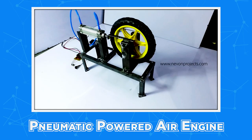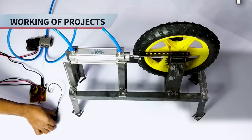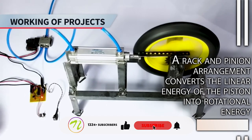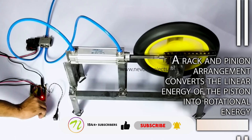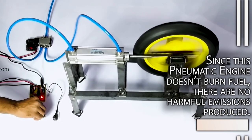Pneumatic powered air engine. This air powered engine is driven by a pneumatic piston. A rack and pinion arrangement converts the linear energy of the piston into rotational energy. Since this pneumatic engine doesn't burn fuel, there are no harmful emissions produced.